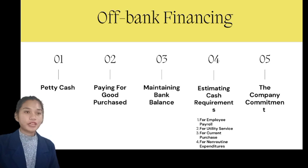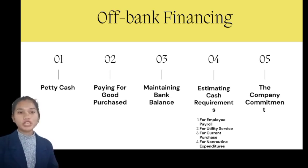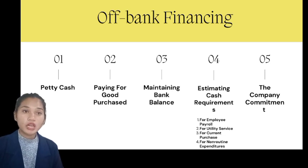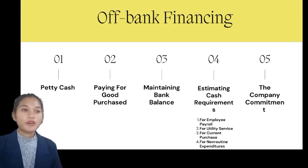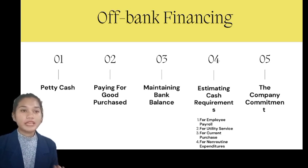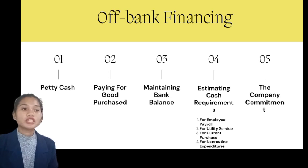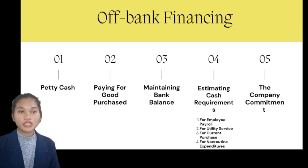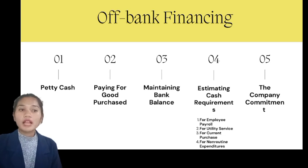The fifth classification of off-bank financing is the company commitment. A commitment sheet, which the treasurer may always refer to, shows how much money is due and when, and is updated as promises are made. Since budget approval is meant to provide sufficient justification for spending, it follows that the commitment sheet will likewise include budget items.